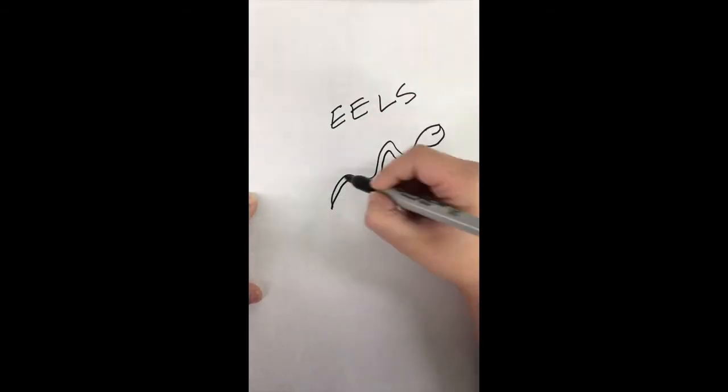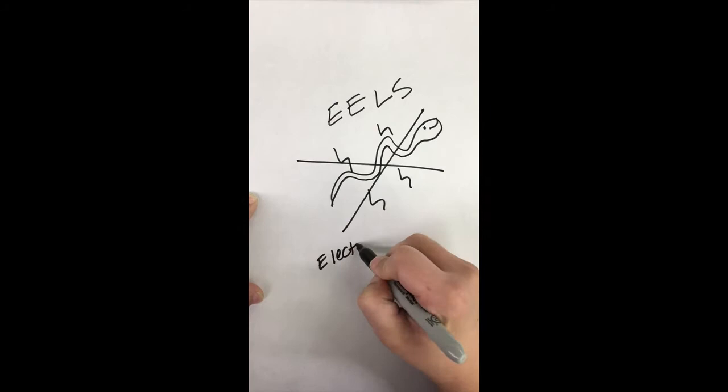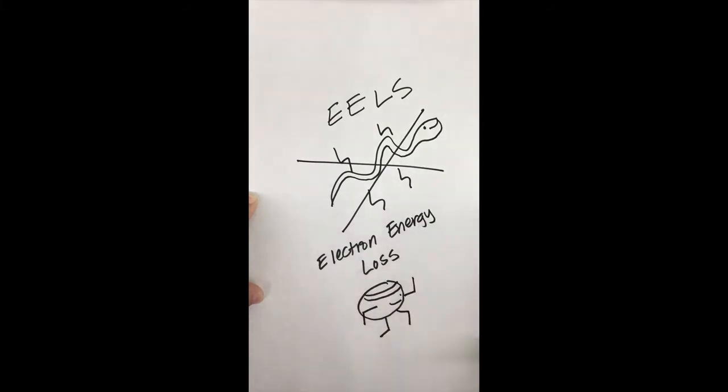This brings us to the topic of EELS. No, not electric eels. Electron energy loss spectroscopy, which doesn't mean that little electrons run in a race.